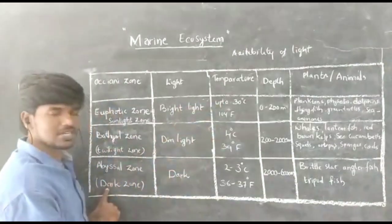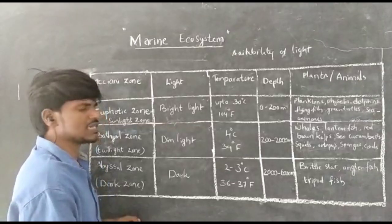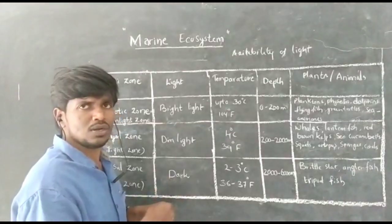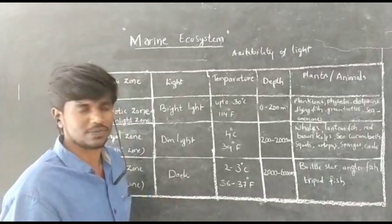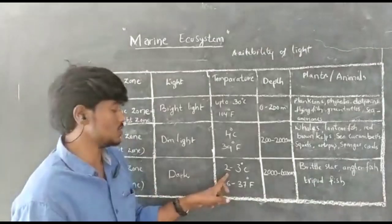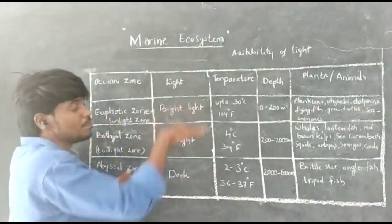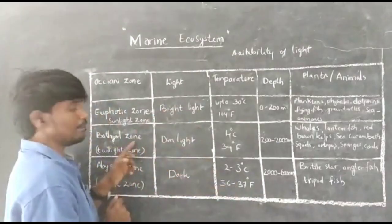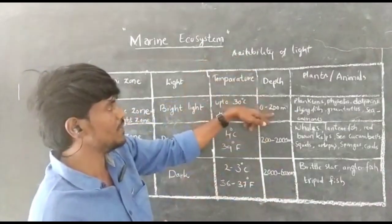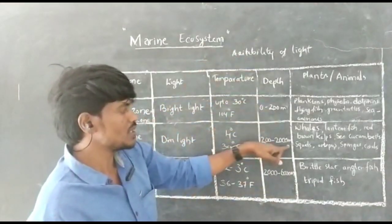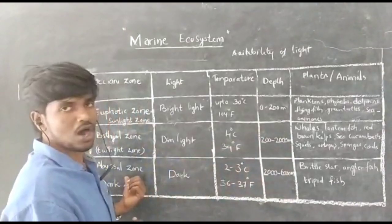The third zone is the abyssal zone, also known as the dark zone. The name itself indicates darkness — very little light is available, and light cannot penetrate into this zone. So this zone is dark throughout the year. The temperature is very low at 2 to 3 degrees centigrade only. This zone is present just beneath the bathyal zone, from 2000 meters to 6000 meters depth.